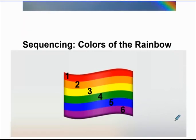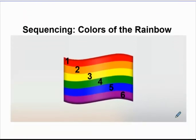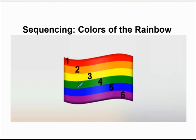So let's look at our sequence of the rainbow. Colors of the rainbow: the first color was red, the second color was orange, the third color was yellow, the fourth color was green, the fifth color was blue, the sixth color was purple.